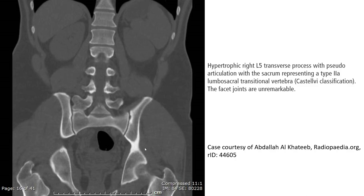This is an example of this. What we can see here is a hypertrophic transverse process with pseudo-articulation with the sacrum, representing Type 2A lumbar sacral transitional vertebrae by Castellvi classification. The facet joints are unremarkable.